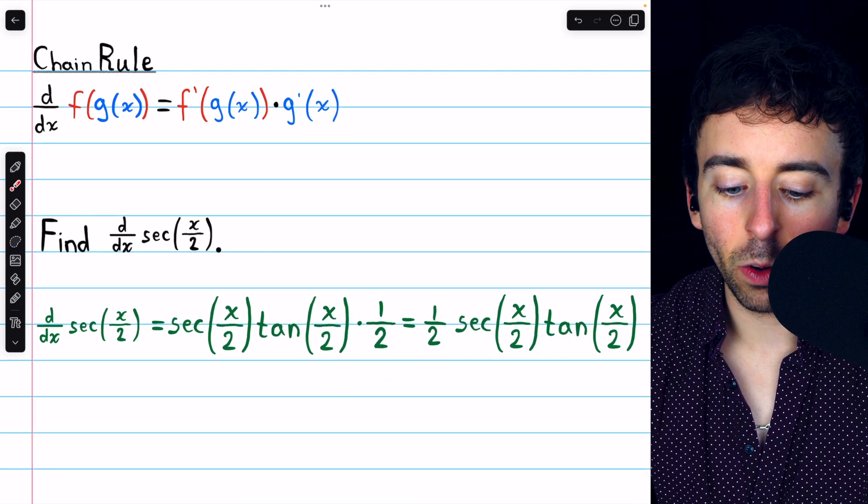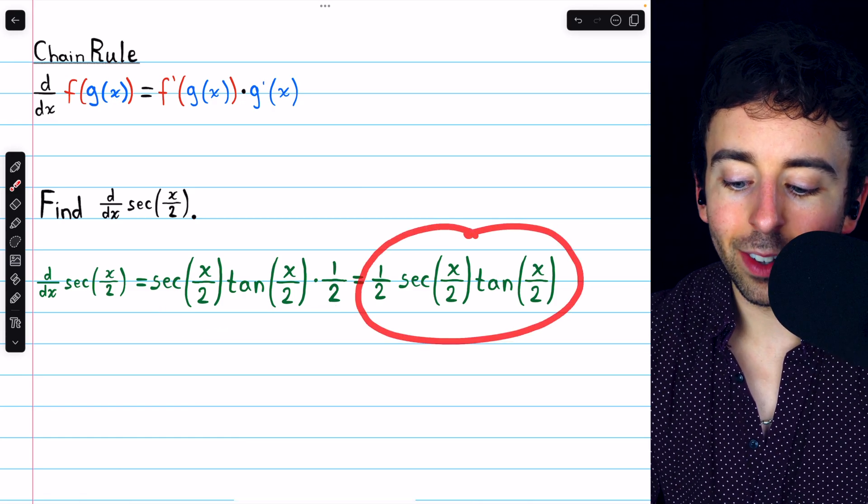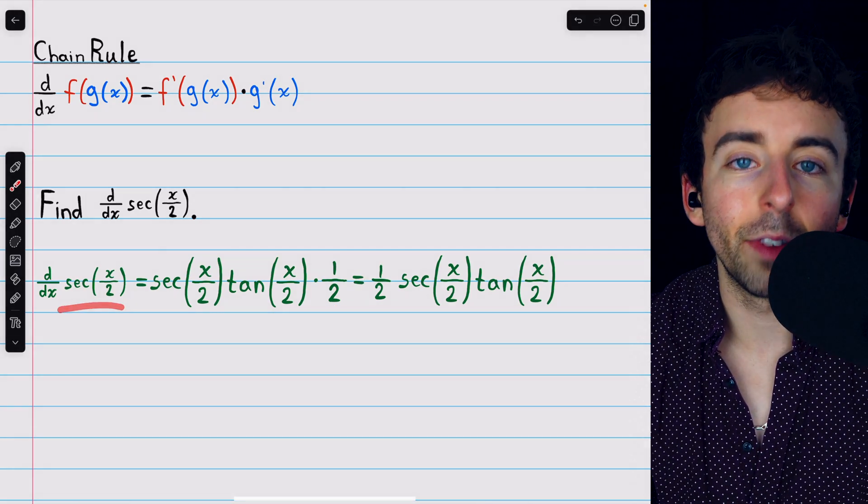So we multiply by one half, and that gives us our final answer. We would probably prefer to bring the one half to the front, and call it one half secant x over 2 tangent x over 2. That's the derivative of secant of x over 2.